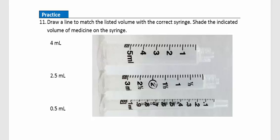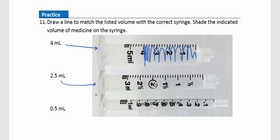Practice question 11: Match and shade the syringes. The 4 mL dose goes with the appropriate syringe — shade right up to 4. For 2.5 mL, use the 3 mL syringe; there's a clear mark at 2.5, so shade right to there. For 0.5 mL, use the 1 mL syringe; marks at 0.3, 0.4, and 0.5 are clearly visible, so shade right to 0.5.